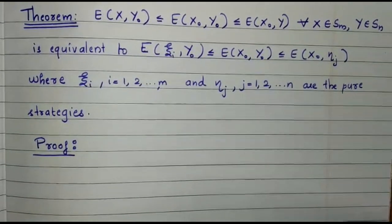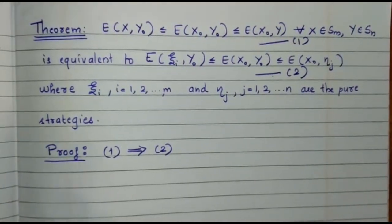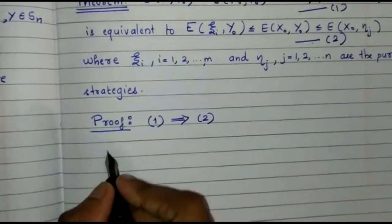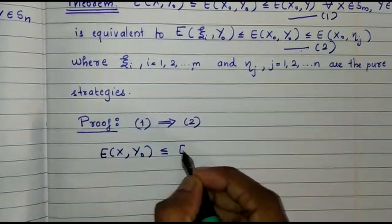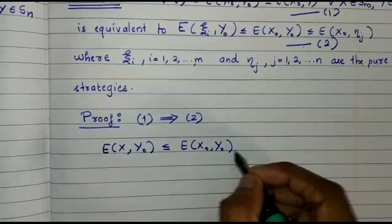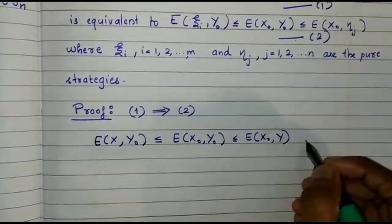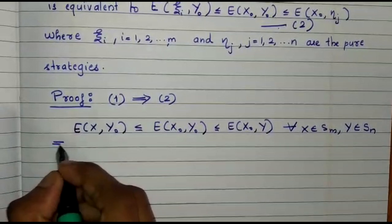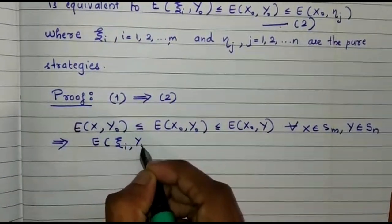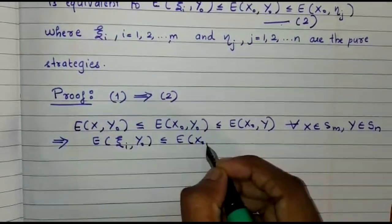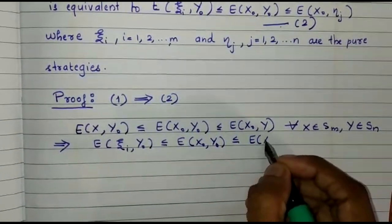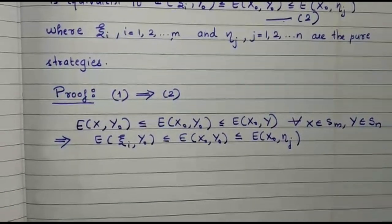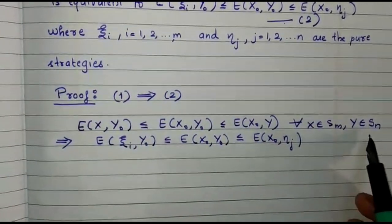Now we will move on to the proof. To begin, we will mark the conditions as 1 and 2. We are going to prove 1 implies 2. That is, E(x, y0) ≤ E(x0, y0) ≤ E(x0, y) for all x ∈ Sm, y ∈ Sn implies E(ψi, y0) ≤ E(x0, y0) ≤ E(x0, ηj). This implication is obvious because condition 1 holds for all x ∈ Sm and y ∈ Sn.